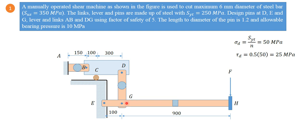Since we have to design pins, levers, and links, we need to find the force at each pin and in the links and lever, and then identify the effect of that load. We need to find the reactions at each pin for designing the pin. The resultant reactions at points D, G, and E will be the loads on pins D, G, and E. Force F also needs to be obtained. We use free body diagrams for force analysis to find all unknown reactions.